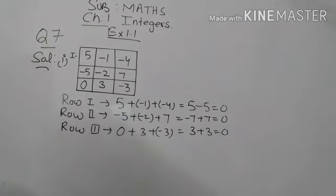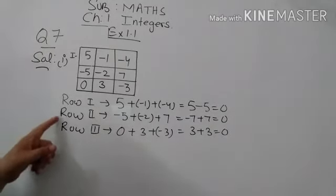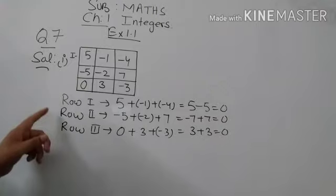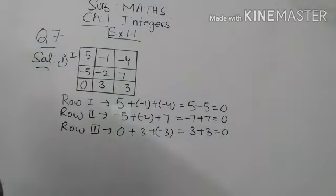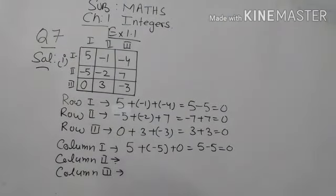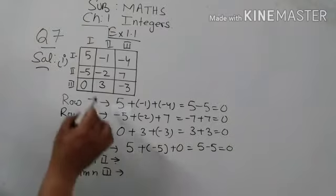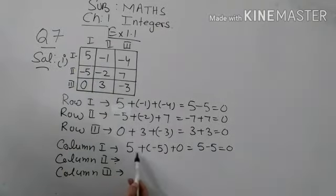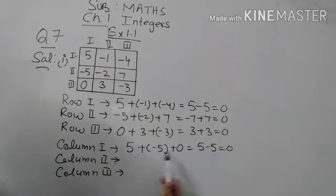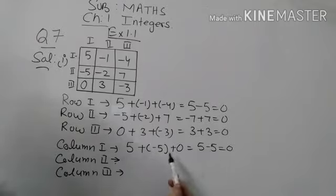The sum of all three rows is found. Now we find the sum of columns. For column one, we add 5, minus 5, and 0: 5 minus 5 plus 0. So 5 minus 5 equals 0. The total value is 0.